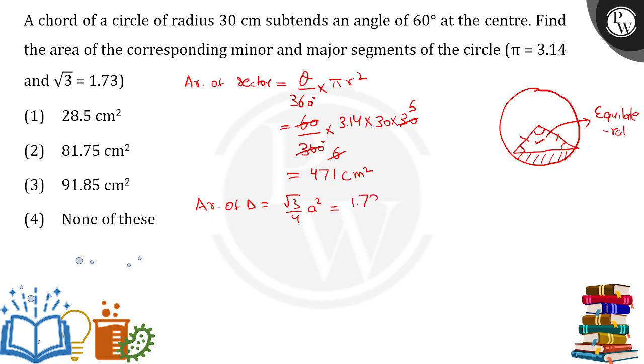Putting the value: 1.73/4 × 30 × 30. Again, calculations we need to follow. Canceling this out: this is 2, this is 15. 15 × 15 is 225.